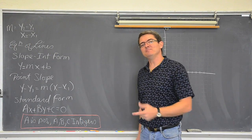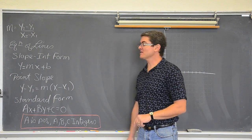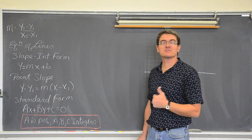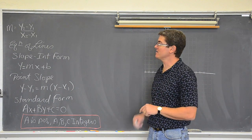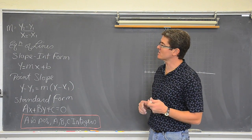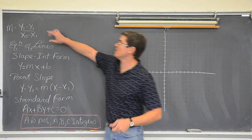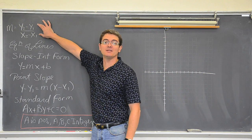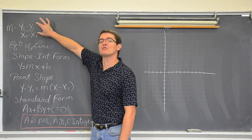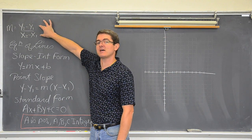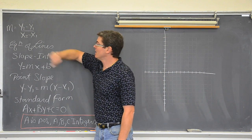Hello again. So another 15 minutes on slopes and equations of lines. We just got done talking about how slope is rise over run, that is y2 minus y1 over x2 minus x1.